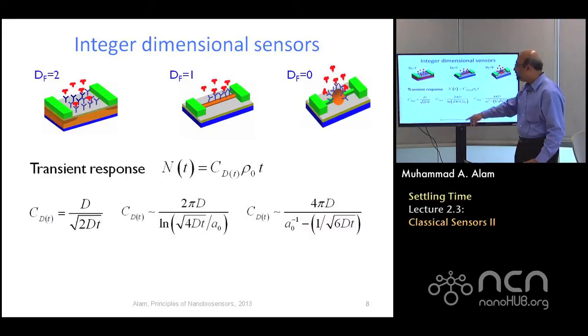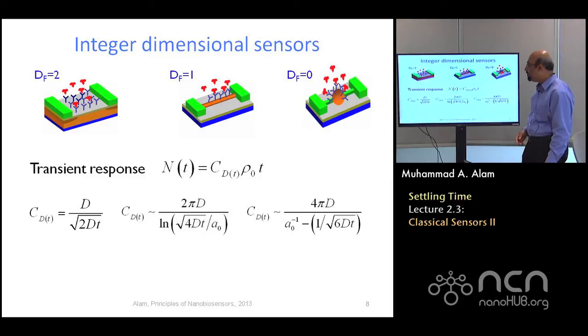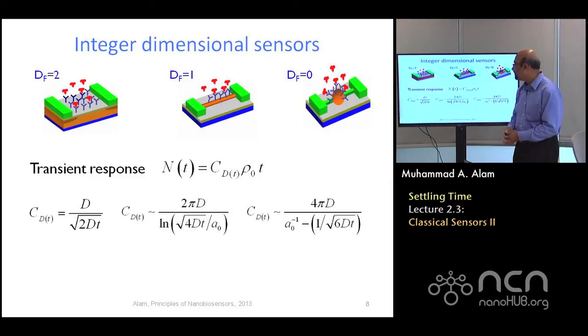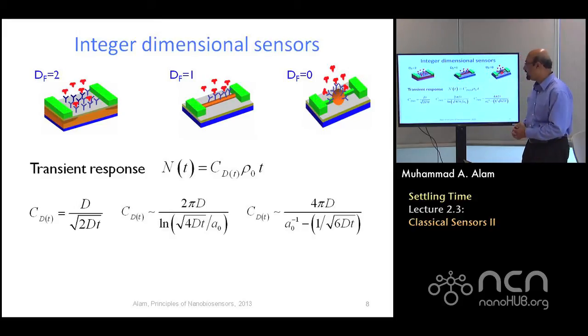It turns out that the transient response, as I told you before, is given by nt, the transient diffusion equivalent capacitance, rho naught and t from two slides before. I know about c dt for each type of system, a different fractal dimension, 2, 1, and 0.